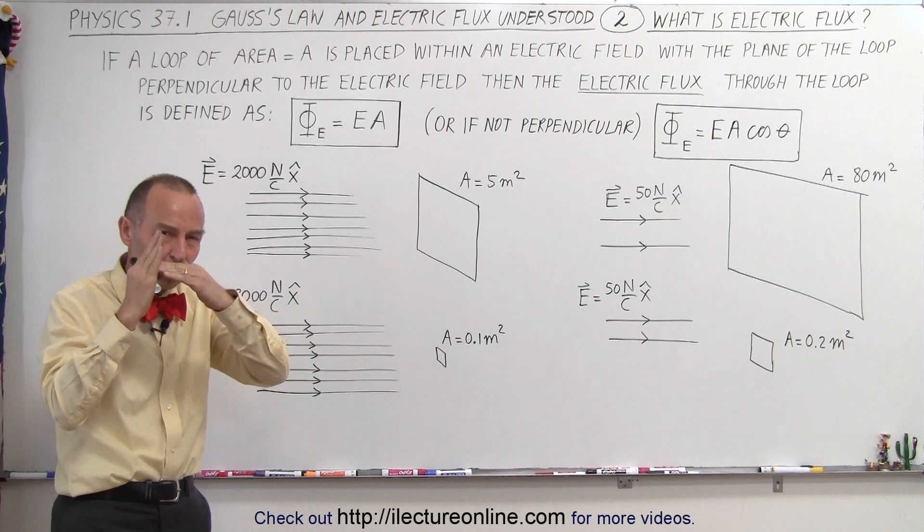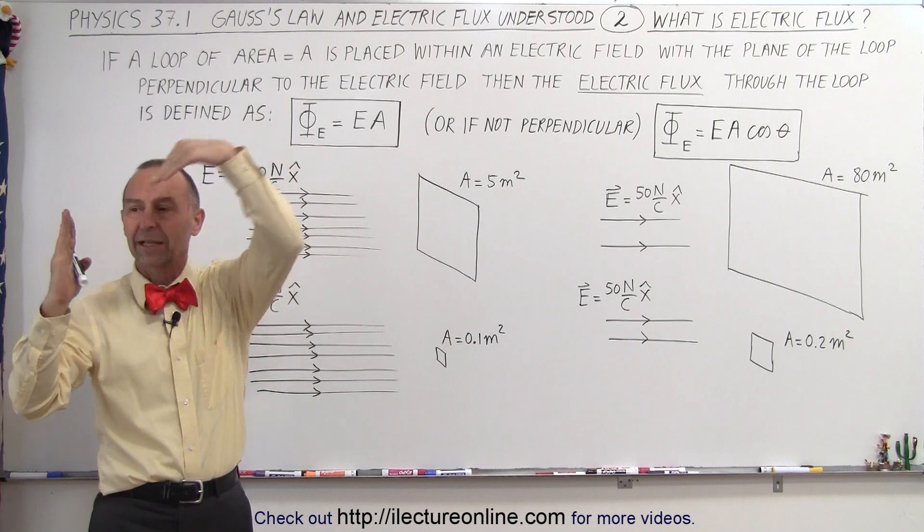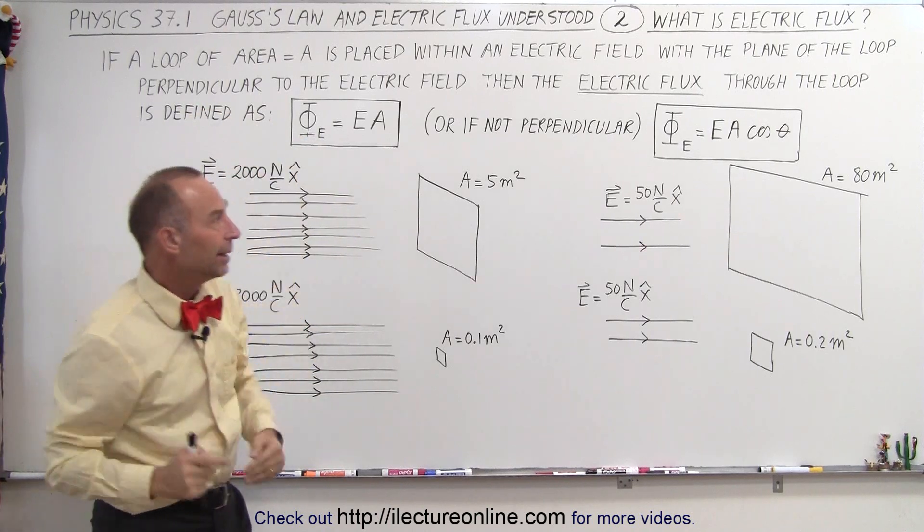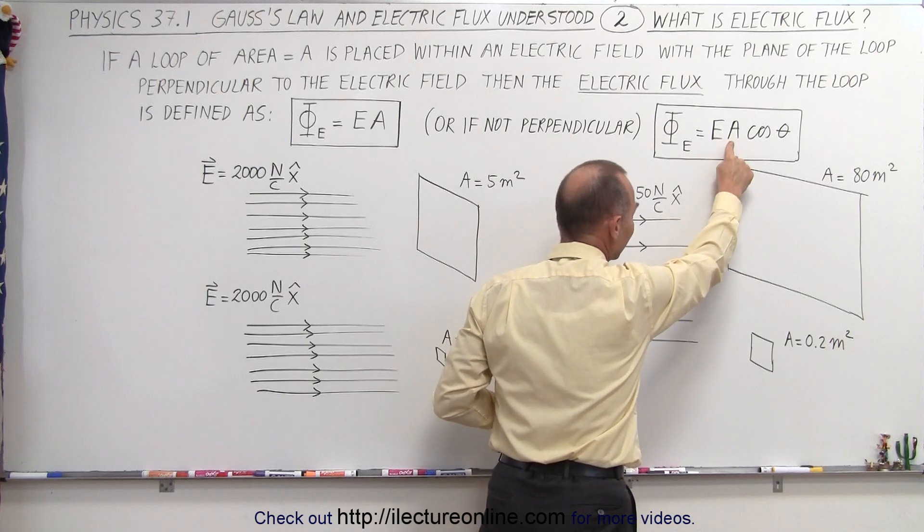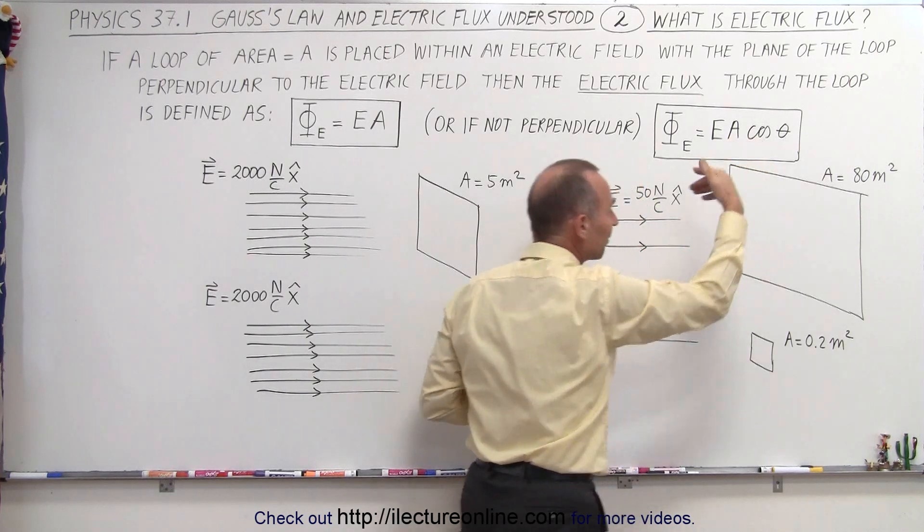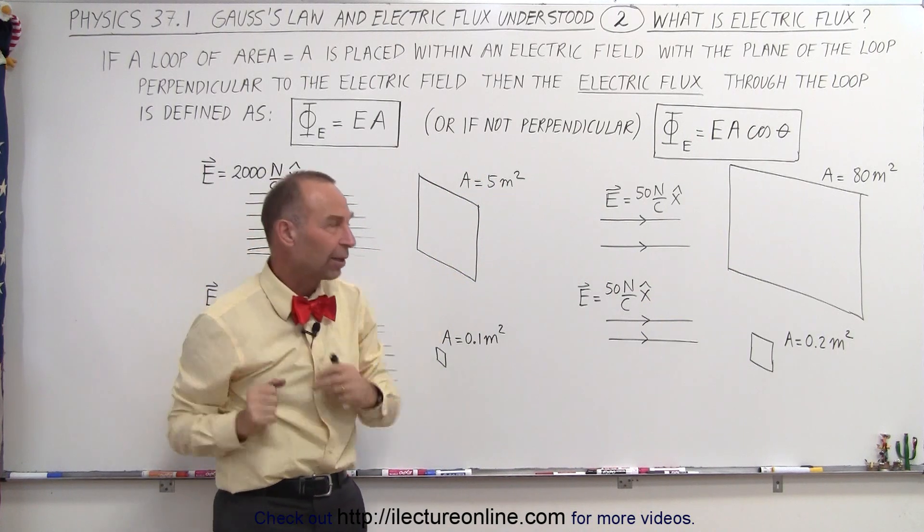And again, that's presuming they're perpendicular to each other. If they're not perpendicular, if the electric field comes in at an angle, then we can say it's the product of the electric field strength times the area of the loop times the cosine of the angle between the perpendicular to the loop and the direction of the electric field.